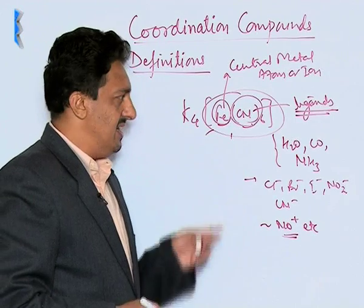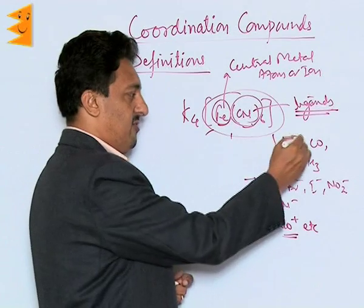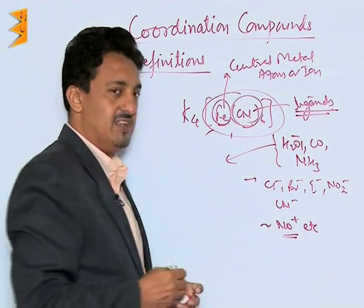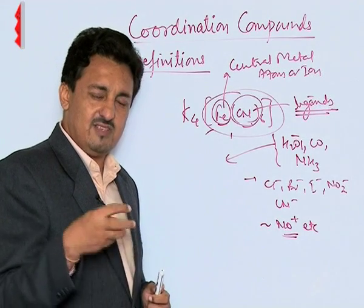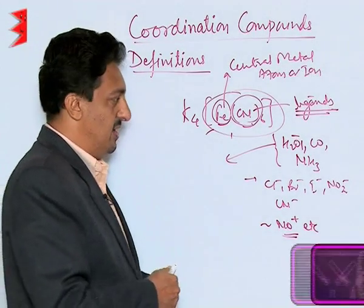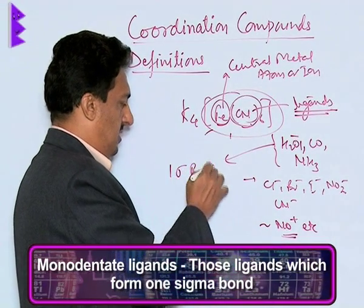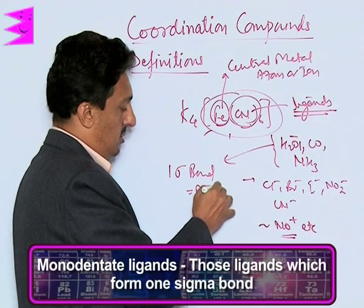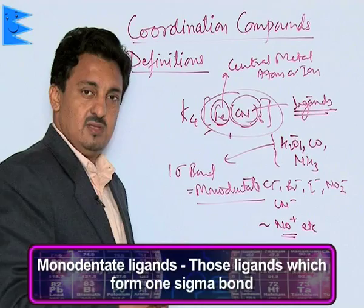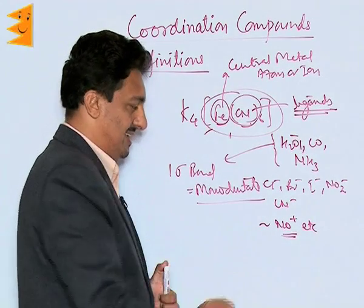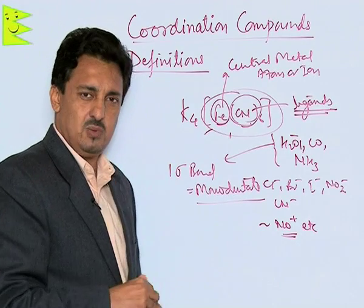These ligands form coordinate bonds because they are electron rich — they donate a pair of electrons and form a dative bond. On the basis of the number of bonds they form with the central metal atom or ion, they can be classified. Those ligands which form one sigma bond are called monodentate ligands — they can only donate one pair of electrons and form only one bond at a time.